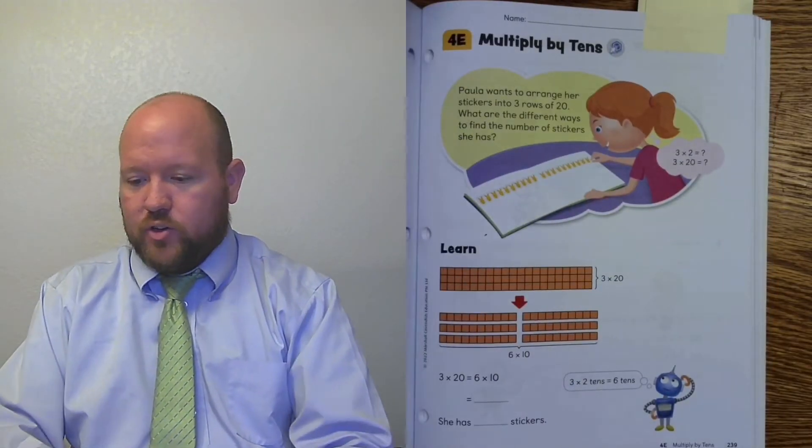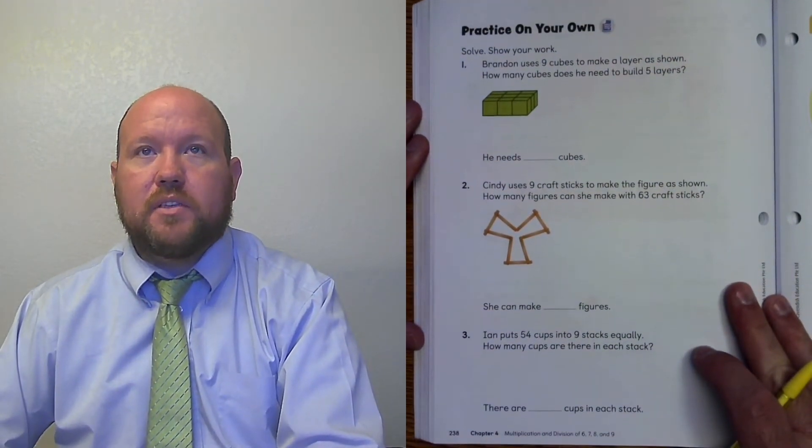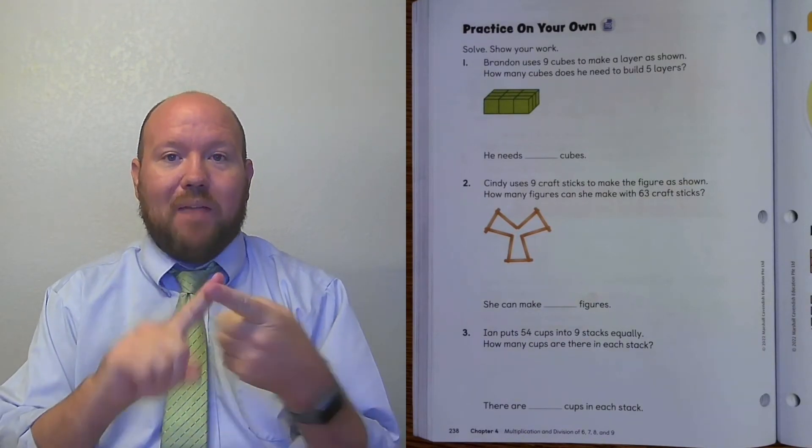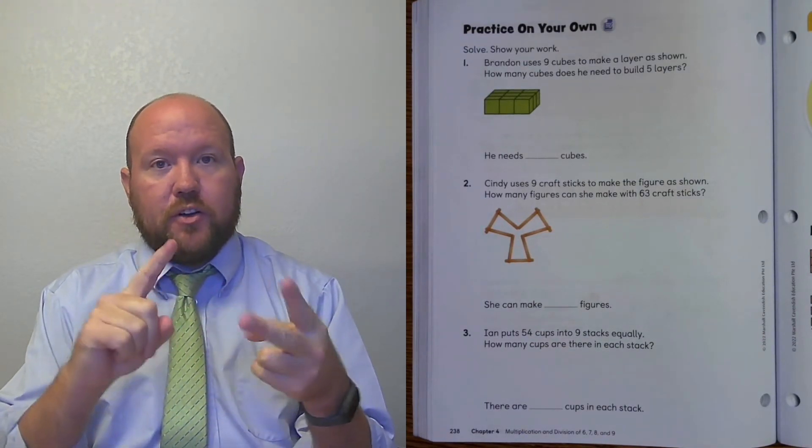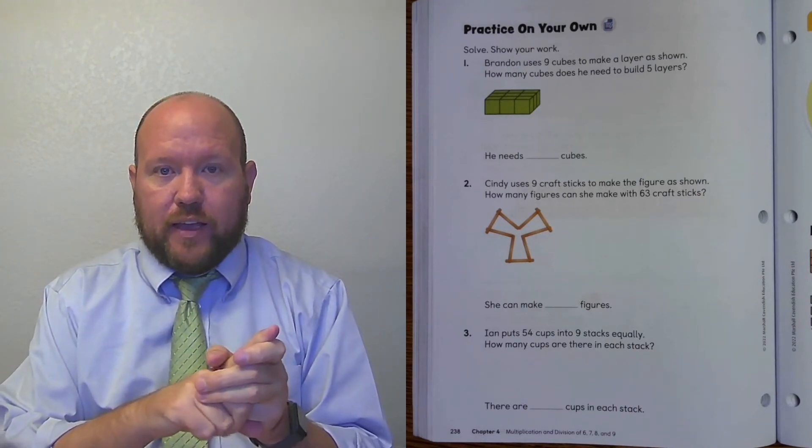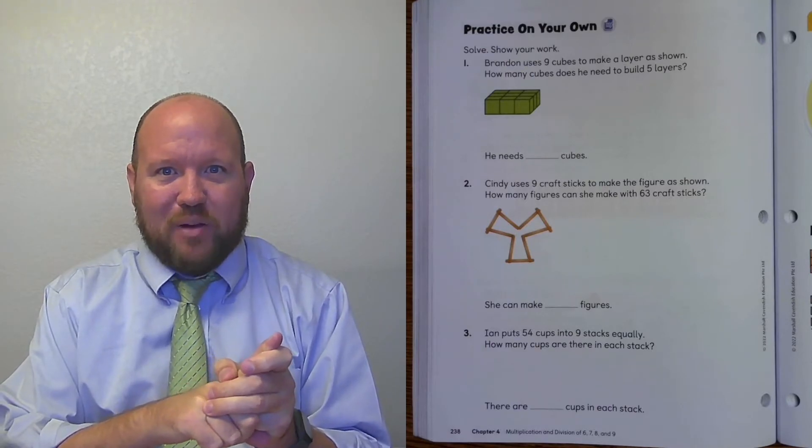Let's turn over to page 238. And there are 3 problems here for practice on your own. So on these, make sure that you're modeling them correctly. Make sure you're doing the algorithm correctly. And you're doing a check. So do those 3 and then come back to the video when you're ready. Go ahead and pause now.